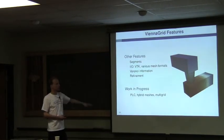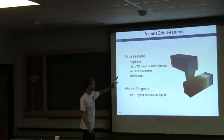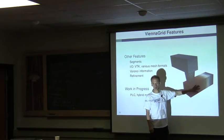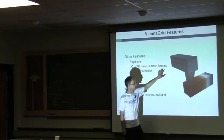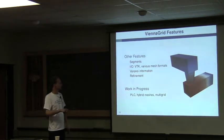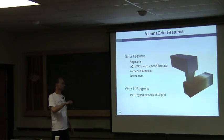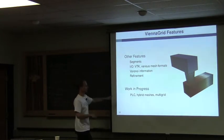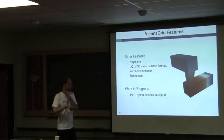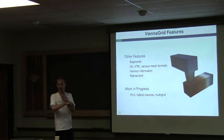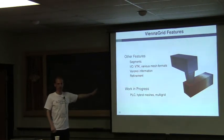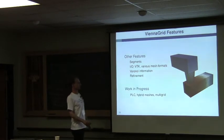Other features in ViennaGrid: segments — if you have a 3D brick structure, different parts can be separate segments. There's support for I/O (reading/writing meshes), computing normal information useful for finite volume schemes, refinement, and things like piecewise linear complexes, hybrid meshes, and macro grids — though these are work in progress and not yet in the release.